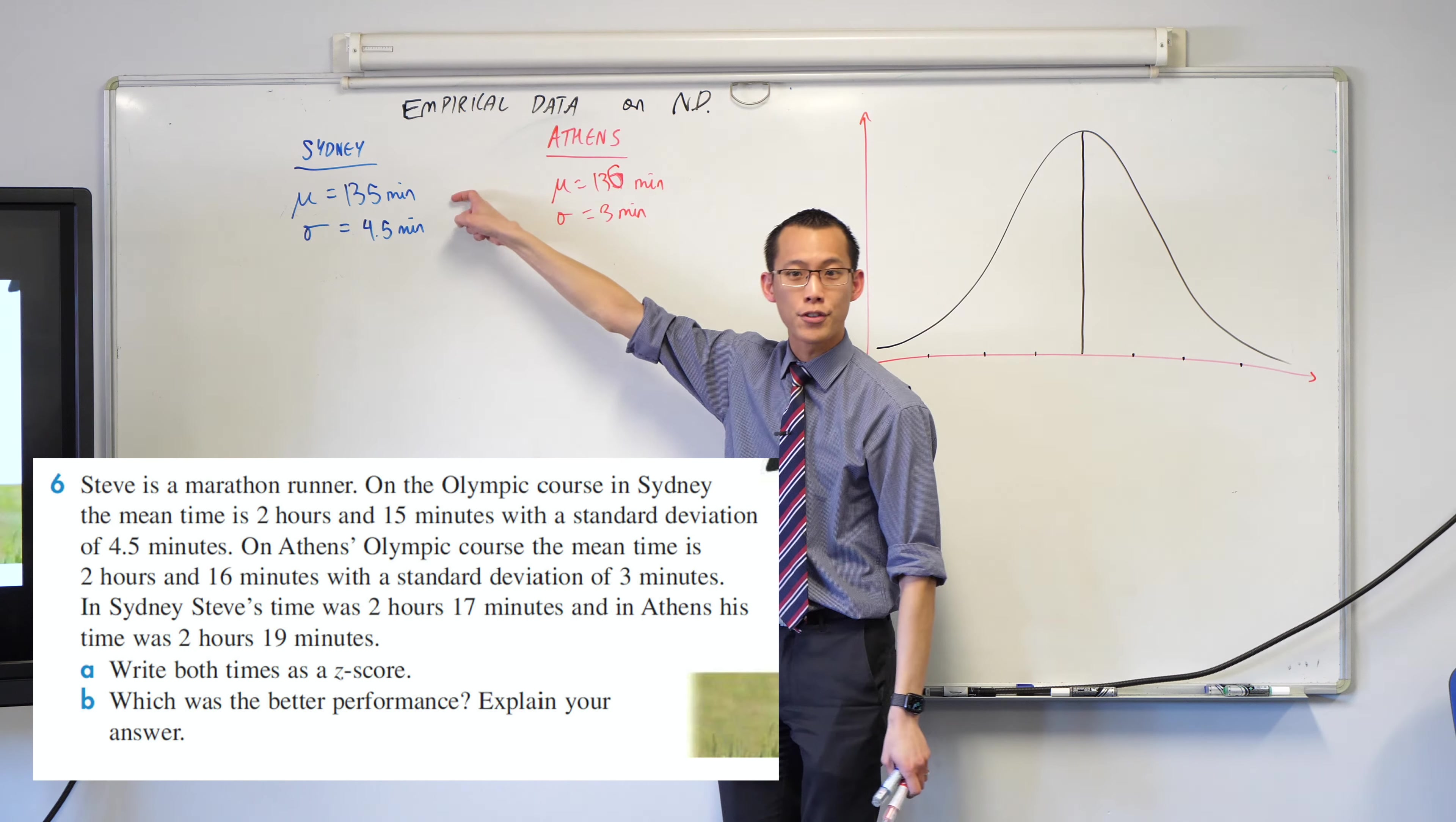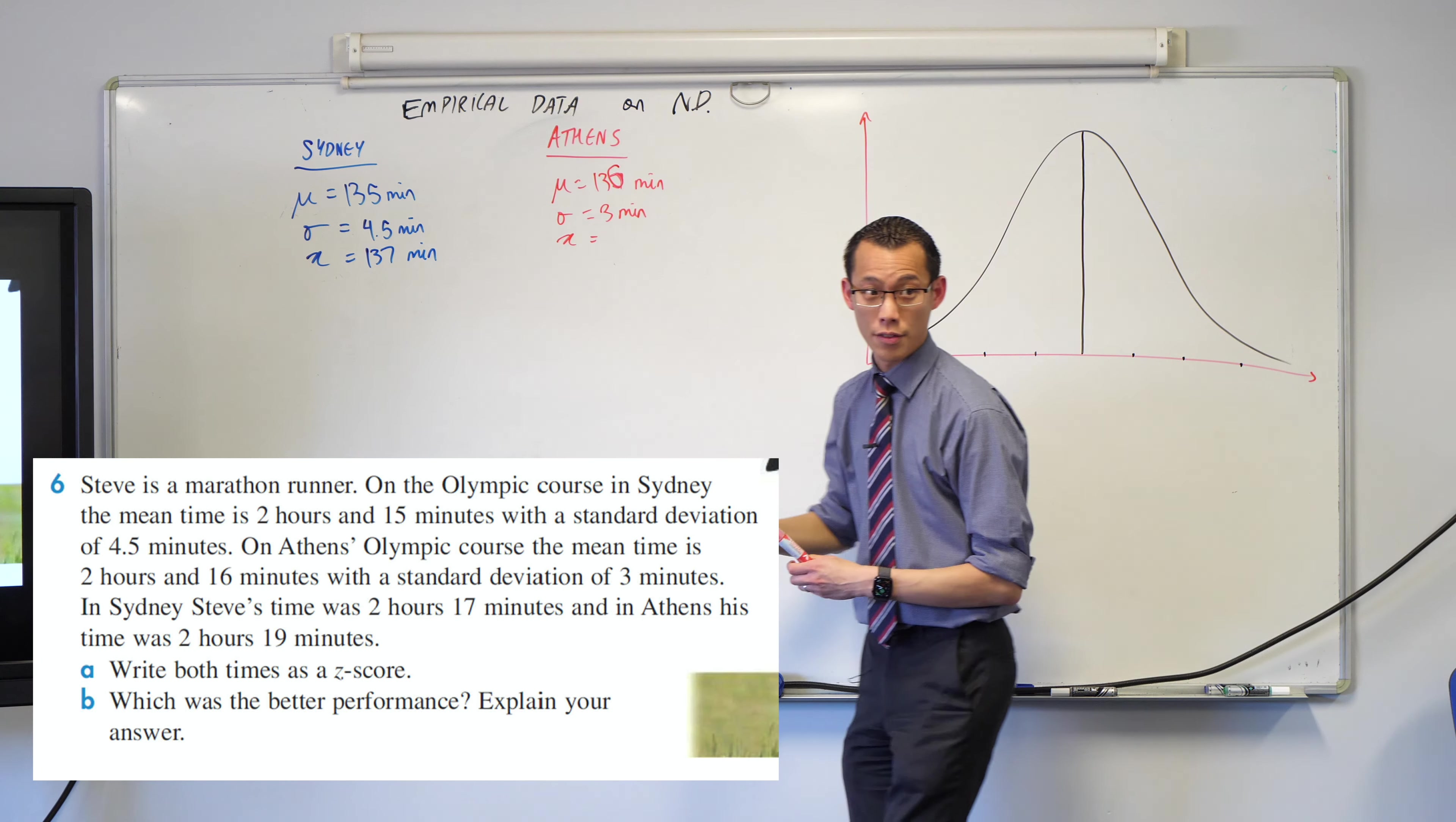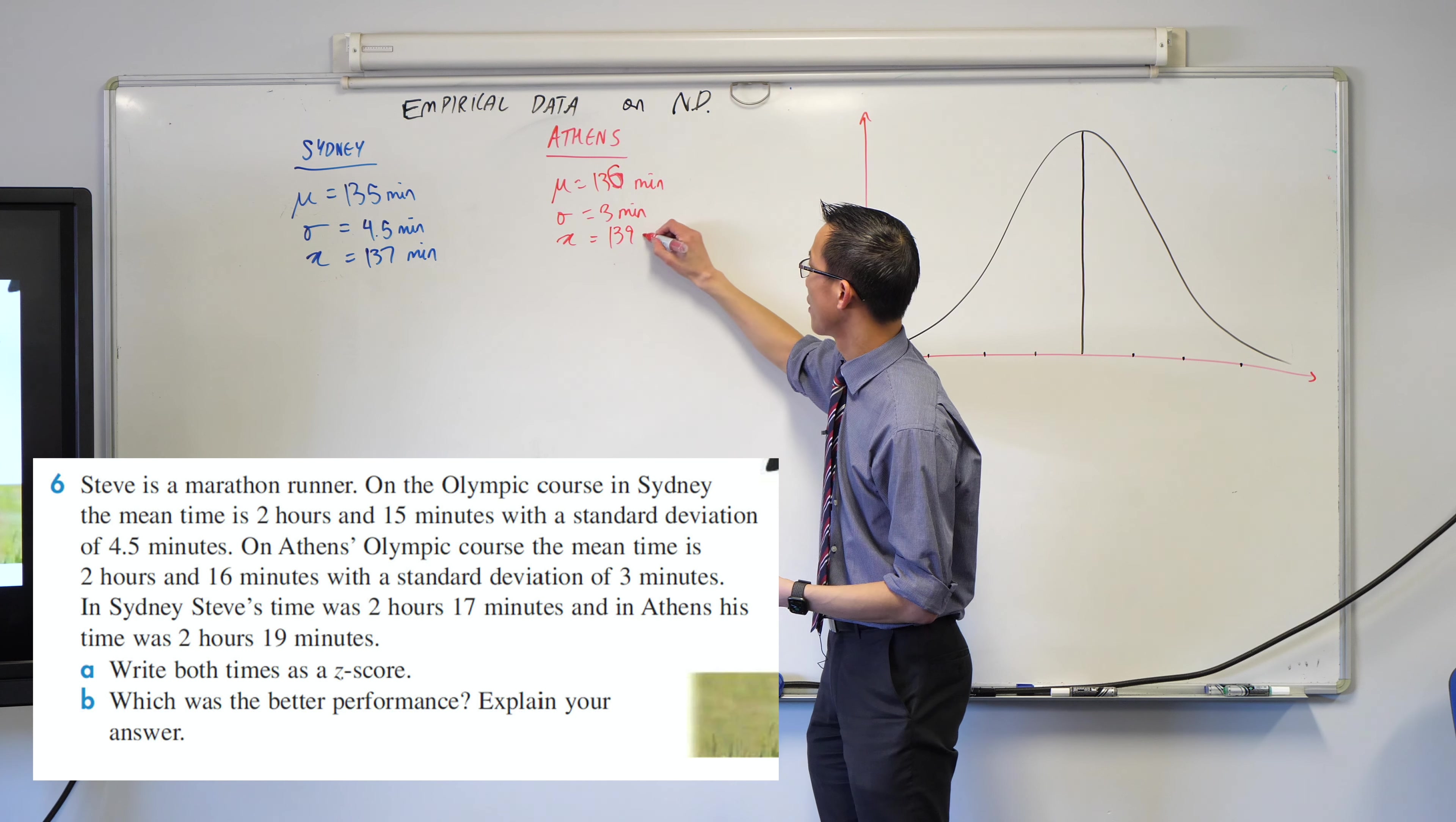Now, what about Steve himself? I've got mean and standard deviation. His time is what we signify by X – your particular score. What's his Sydney running time? 137. You'll notice I'm putting units every time. Every question deals with different units, so I'm careful not to get them wrong. Steve's time is 137 for Sydney and 139 for Athens.